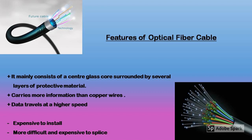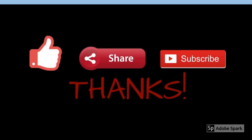Optical fiber carries more information than copper wires, and data travels at higher speeds because the speed of light is always greater than the speed of electrons in a copper wire. The disadvantages are that it is expensive to install as specialists are required, it is not as robust as copper wires, and it is more difficult and expensive to splice. Splicing means joining two fiber optic cables together; it is also used to restore fiber optic cables when buried cables are accidentally damaged. In the next video we'll be studying about wireless transmission media.